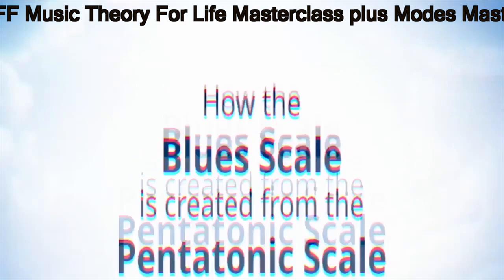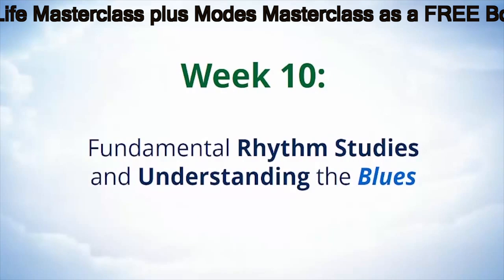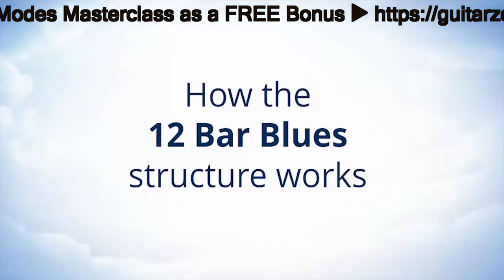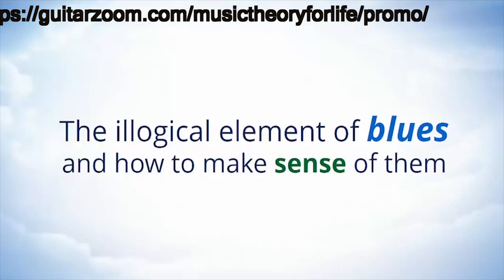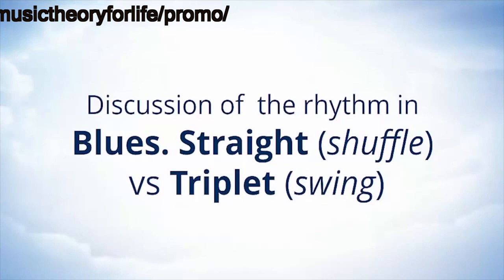In week ten, we'll be looking at fundamental rhythm studies and understanding the blues. We'll learn about the 12-bar blues and how that structure actually works, learn why the 12-bar blues is essentially built on seventh chord sounds, and discuss the illogical element of the blues and how to make sense of it. We'll also discuss the rhythm of the blues — either the shuffle or the swing — and learn how to add extended chord concepts into our blues chords.